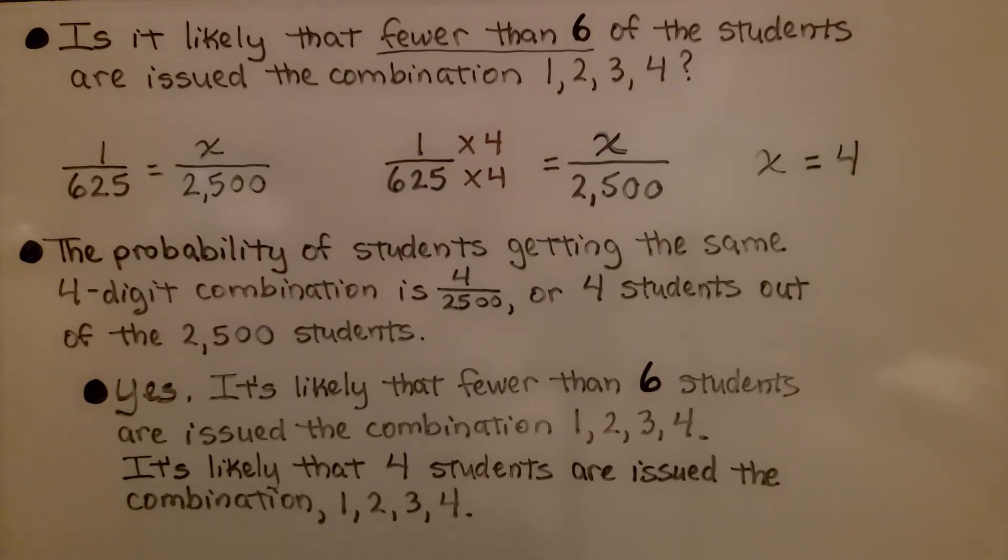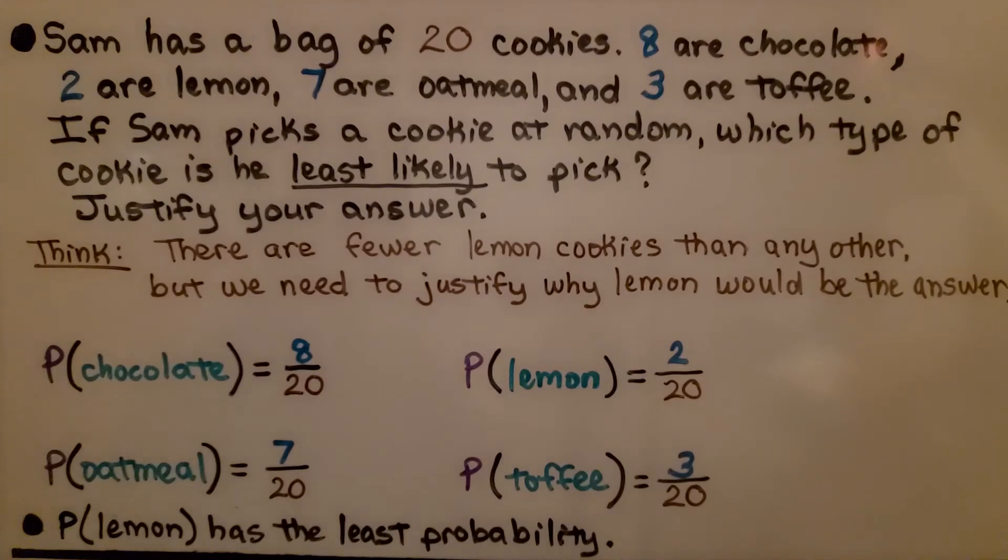Yes, it is likely that fewer than six students are issued the combination one-two-three-four. It's likely that four students are issued the combination one-two-three-four. Let's try another one.